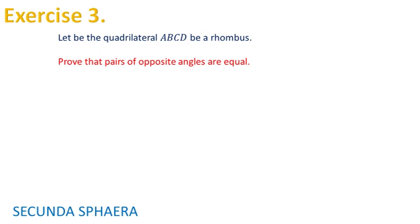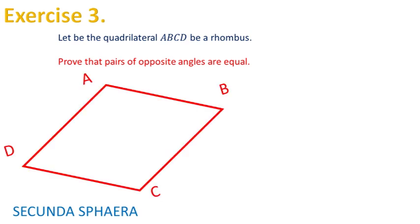Prove that the pairs of opposite angles are equal. On the following drawing of a general rhombus ABCD it can be identified the pairs of angles that need to be proven to be equal.